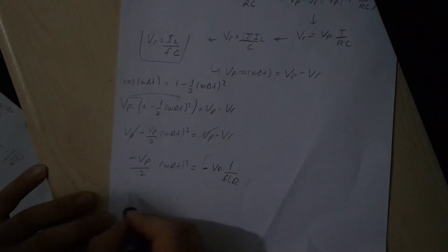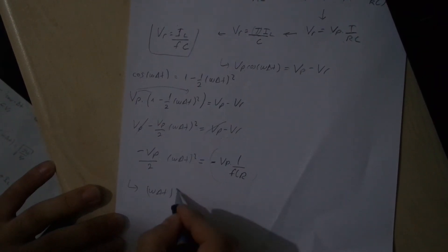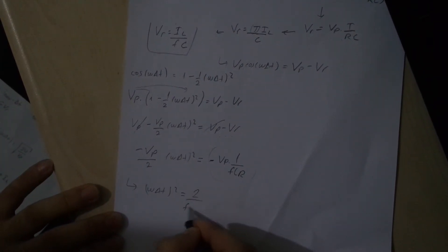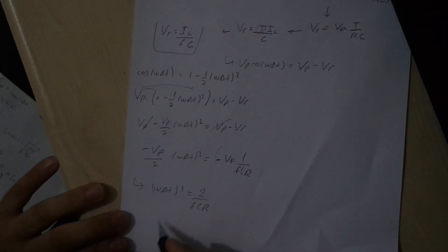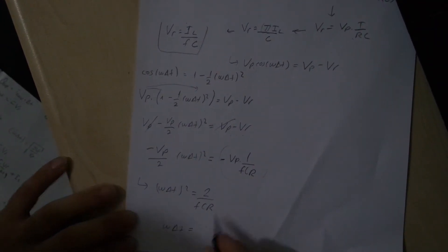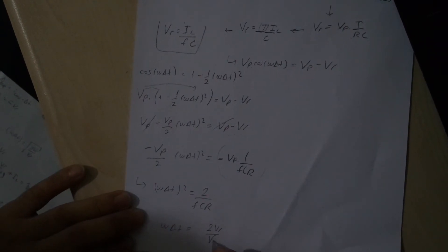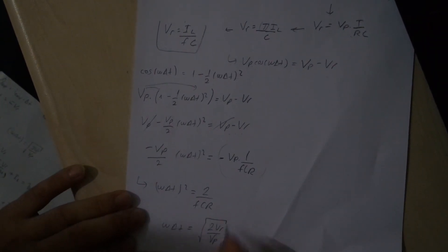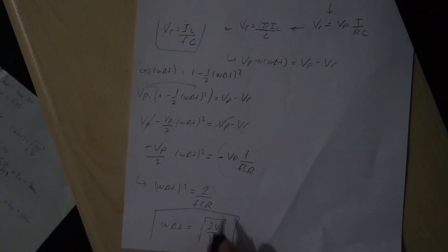And later, omega delta t squared equals 2 over fCR. So omega delta t equals the square root of 2VR over VP. We have found omega delta t.